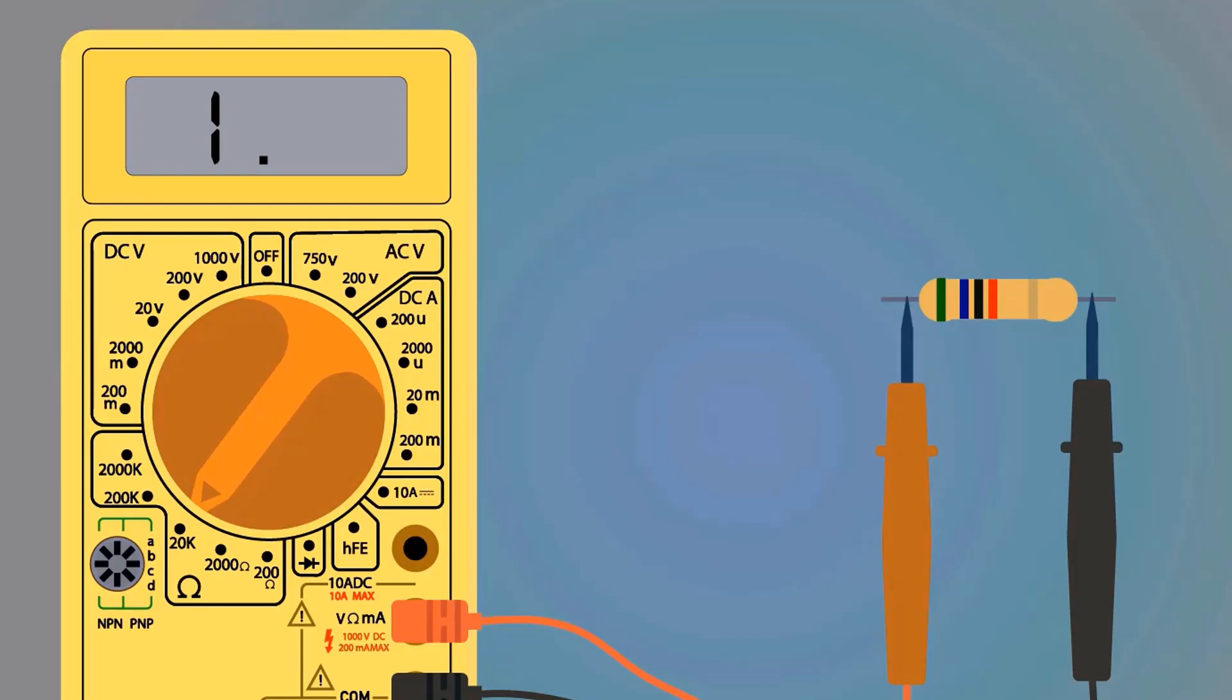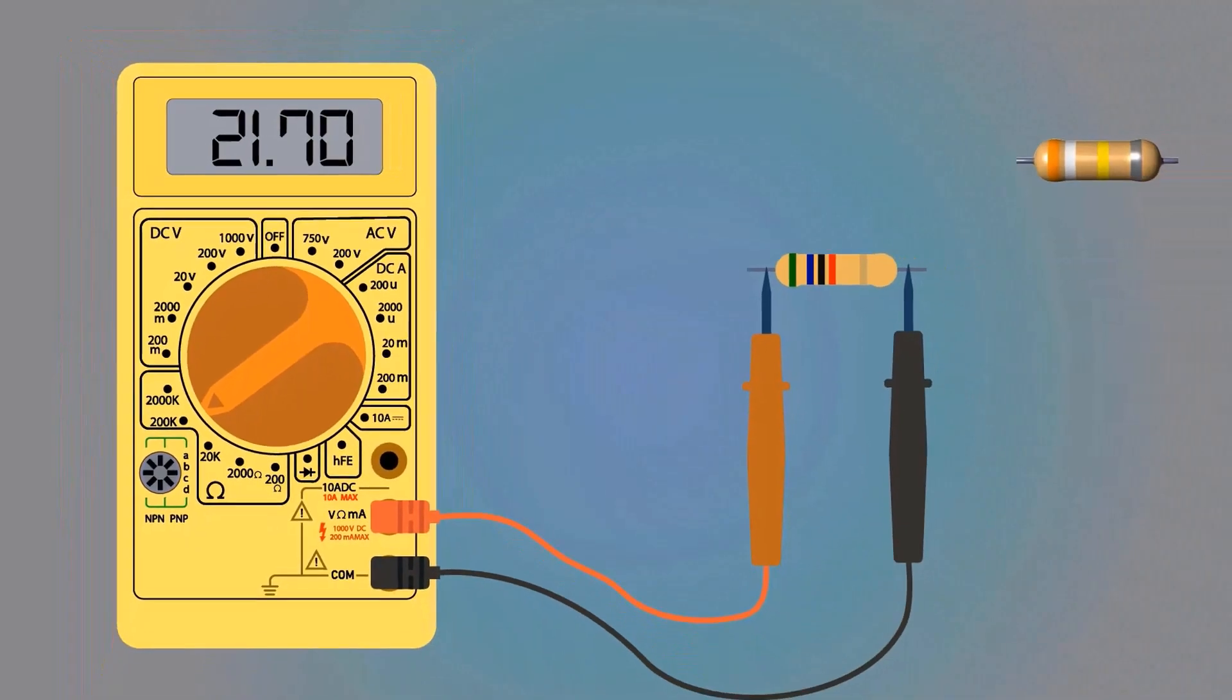So, I am selecting the 200k range. The multimeter display shows 21.70 kilo-ohms. This is the correct value.